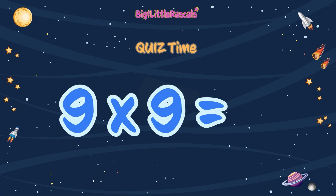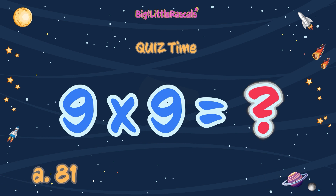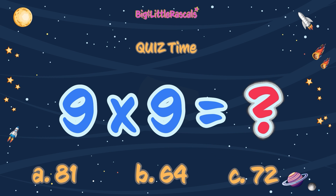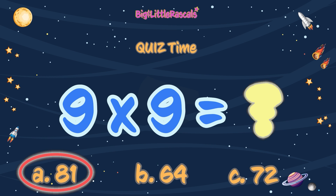9 times 9 equals: A) 81, B) 64, C) 72. What is the correct answer? Write down your answer. The answer is A, 81. Well done, everyone!